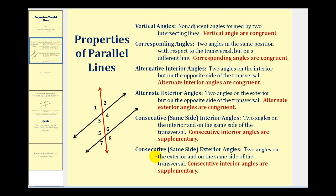And then lastly, we have the consecutive exterior angles, or same side exterior angles — two angles on the exterior, but on the same side of the transversal, and once again, these angles are supplementary. So, angle two and angle eight are same side exterior angles, which are supplementary, as well as angle one and angle seven.